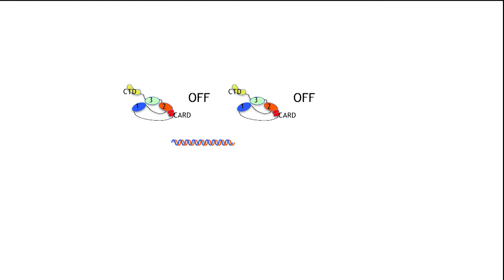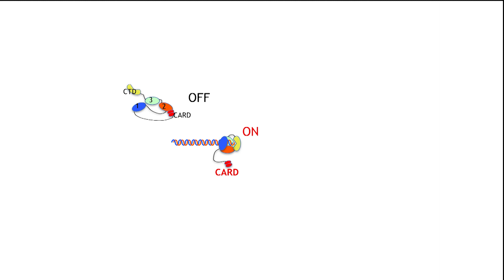The atomic structure of RIG-I and MDA5 revealed that these sensors normally form an open structure in which one of the structural domains, CARD, is hindered by interaction with other domains. When these sensors bind with double-stranded RNA, they change conformation into a packed structure with CARD exposed. CARD plays an important role for the propagation of signaling through interaction with another effector molecule termed IPS1.